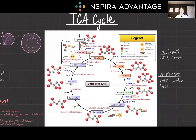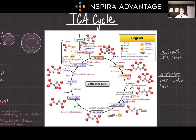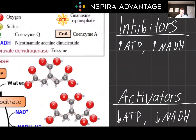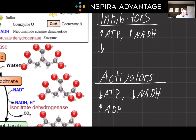The TCA cycle is tightly regulated to meet the cell's energy demands. Key enzymes — citrate synthase, isocitrate dehydrogenase, and alpha-ketoglutarate dehydrogenase — play significant roles. These enzymes are regulated by energy status indicators like ATP, NADH, and ADP. High ATP and high NADH, meaning you have a lot of energy, inhibit these enzymes and slow down the cycle. Conversely, high ADP — meaning you're low on energy — activates the cycle. The cycle is also influenced by substrate availability, like acetyl-CoA and oxaloacetate, linking it to glycolysis and fatty acid metabolism.